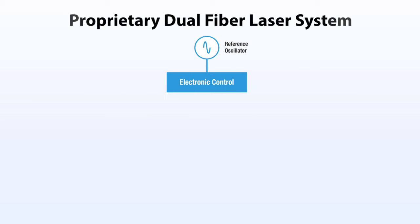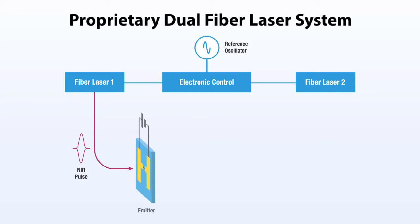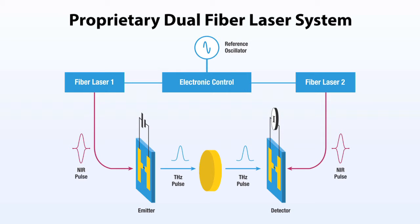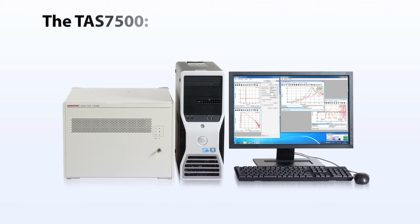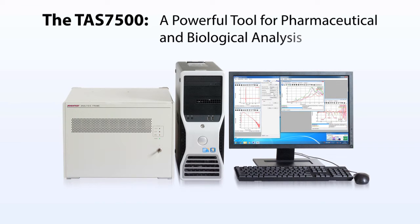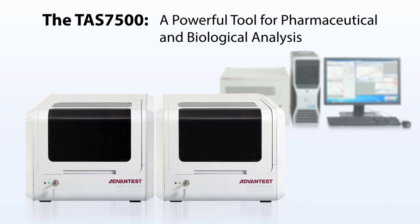Both the spectroscopy and imaging units share the same proprietary dual fiber laser detection system. This entirely electro-optic device delivers high-speed analysis and high reliability in a small package. The ADVANTEST TAS7500 terahertz system provides the flexibility to characterize a wide range of materials, from pharmaceutical compounds to biomolecules and live cells.